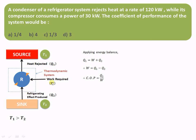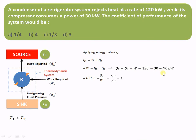In our example, Q1 is given as 120 kilowatt and W is given as 30 kilowatt. Substituting these values, Q2 equals Q1 minus W, that is 120 minus 30, which equals 90 kilowatt. So Q2 is 90 and W is 30, giving a coefficient of performance of this particular system equal to 3.